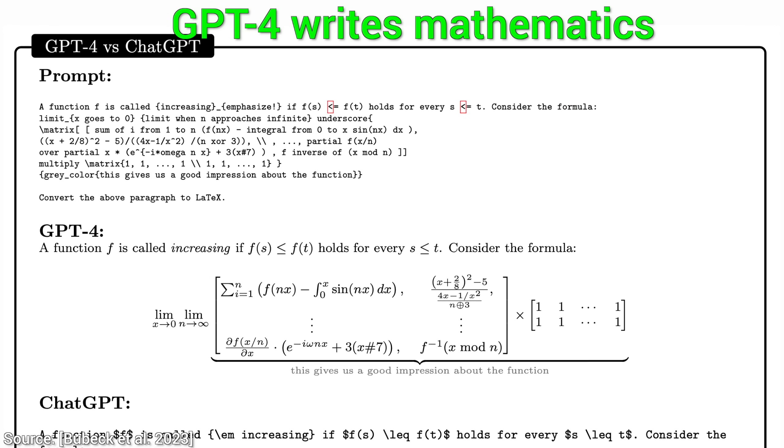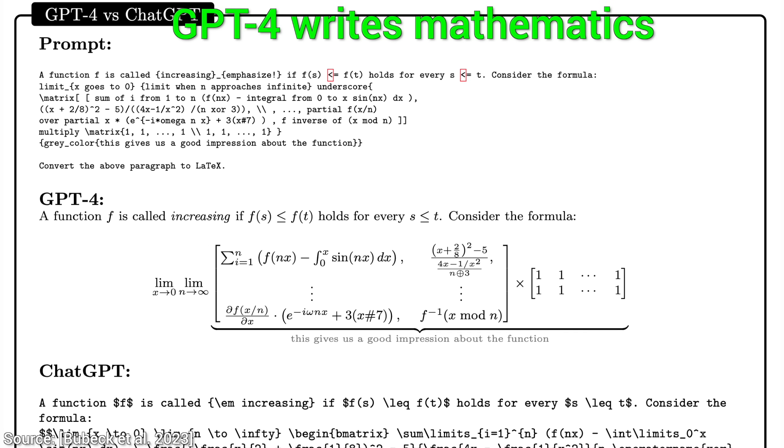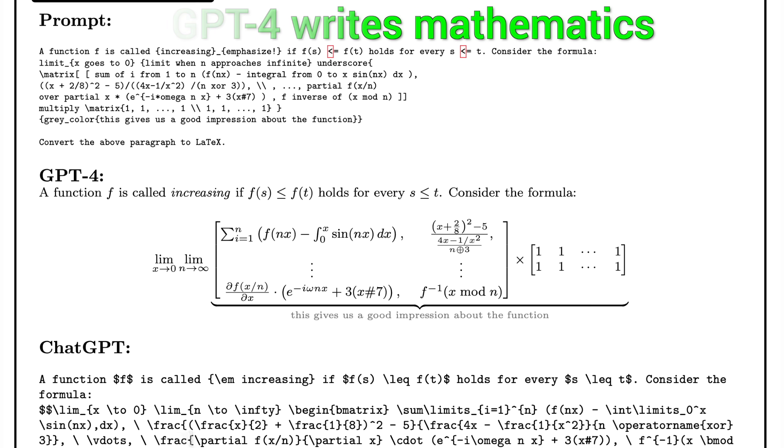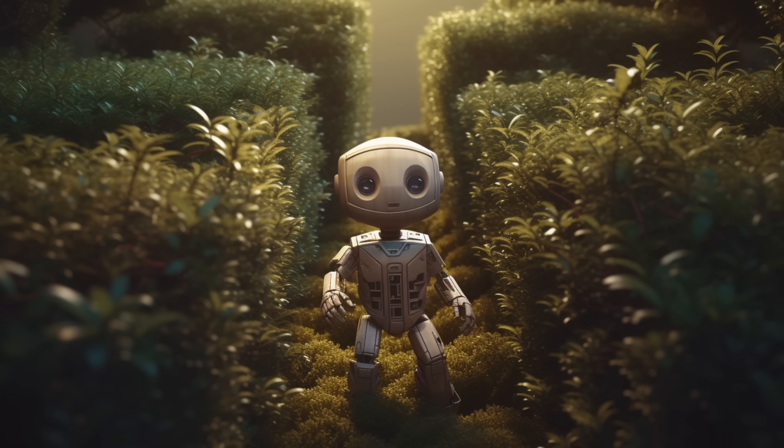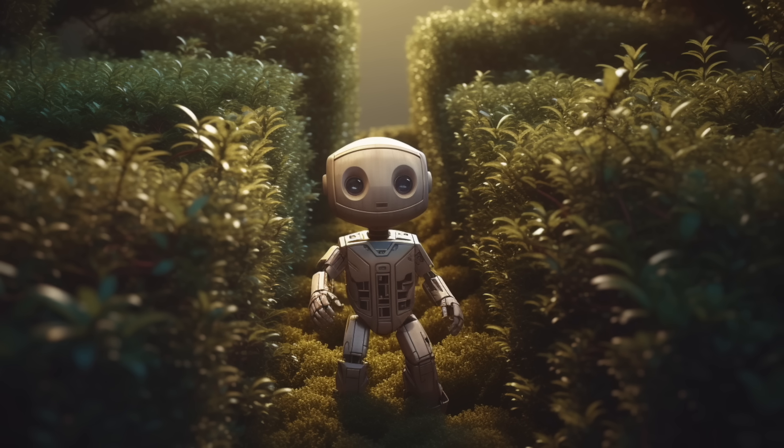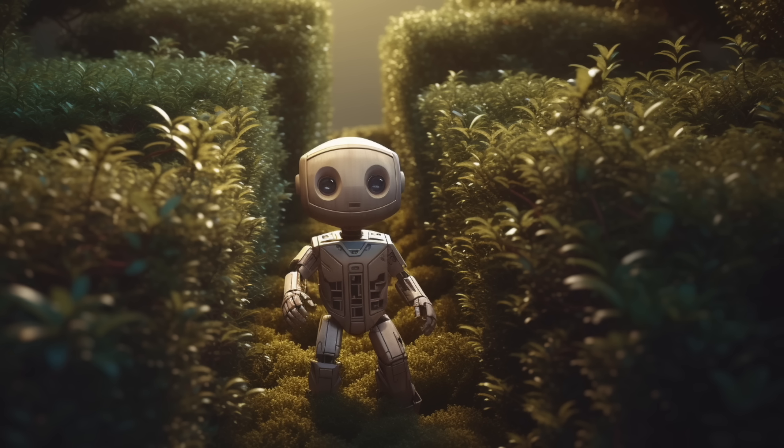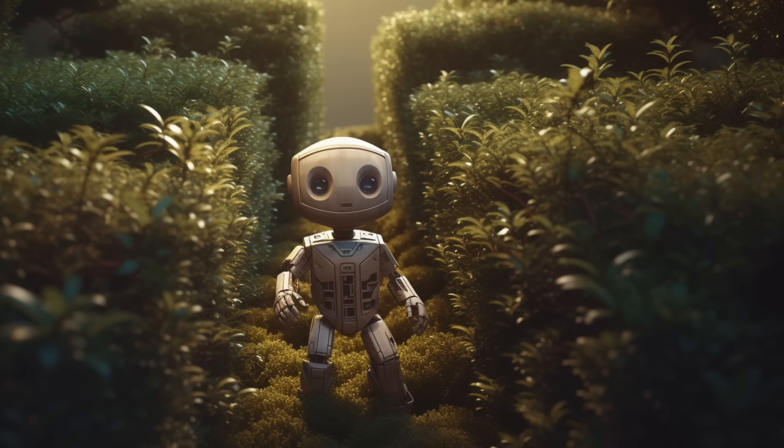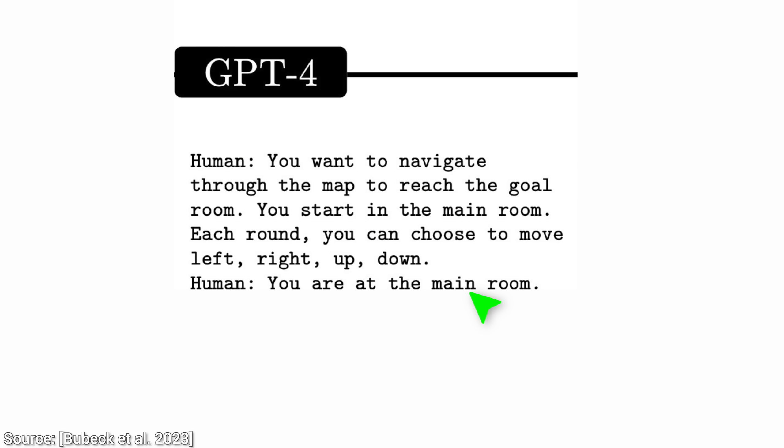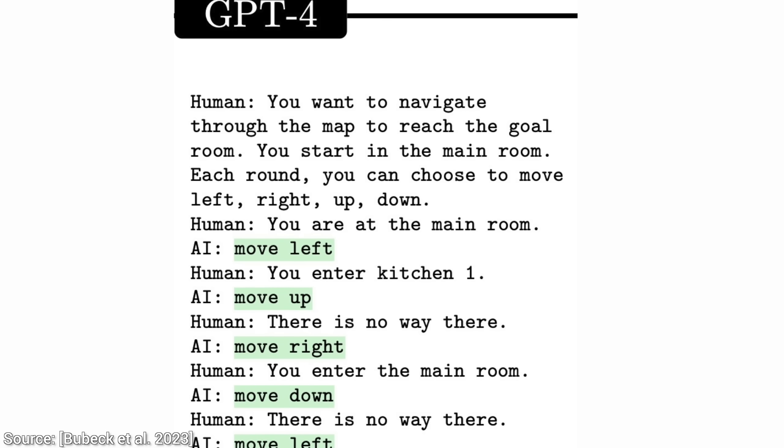Let's start immediately with what I find to be perhaps the most fun experiment. Scientists had the idea to play a text-based game with GPT-4 where the AI can navigate through a map and we make up a little adventure and tell it what happened. For instance, it starts in the main room and it chooses to move left. We say that this is now Kitchen 1, so it says that it wishes to move up. And so on it goes.